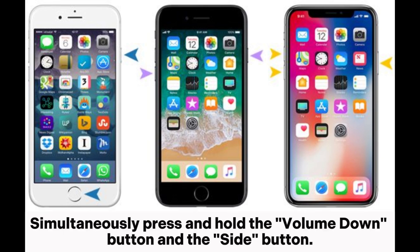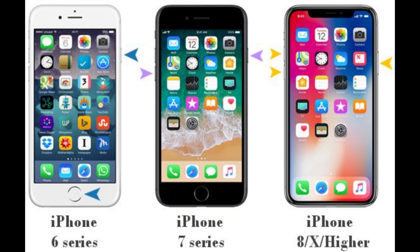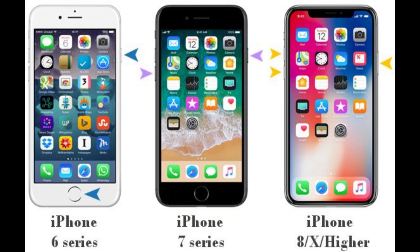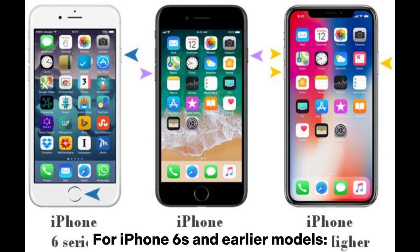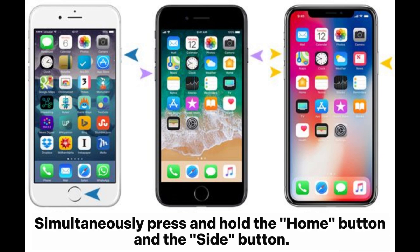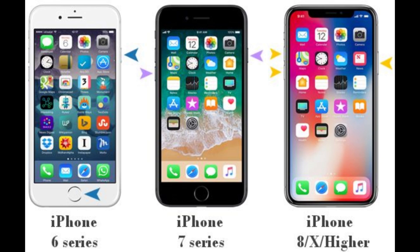For iPhone 7 and 7 Plus, simultaneously press and hold the Volume Down button and the Side button, and continue holding both buttons until the Apple logo appears. For iPhone 6s and earlier models, simultaneously press and hold the Home button and the Side button, and continue holding both buttons until the Apple logo appears.